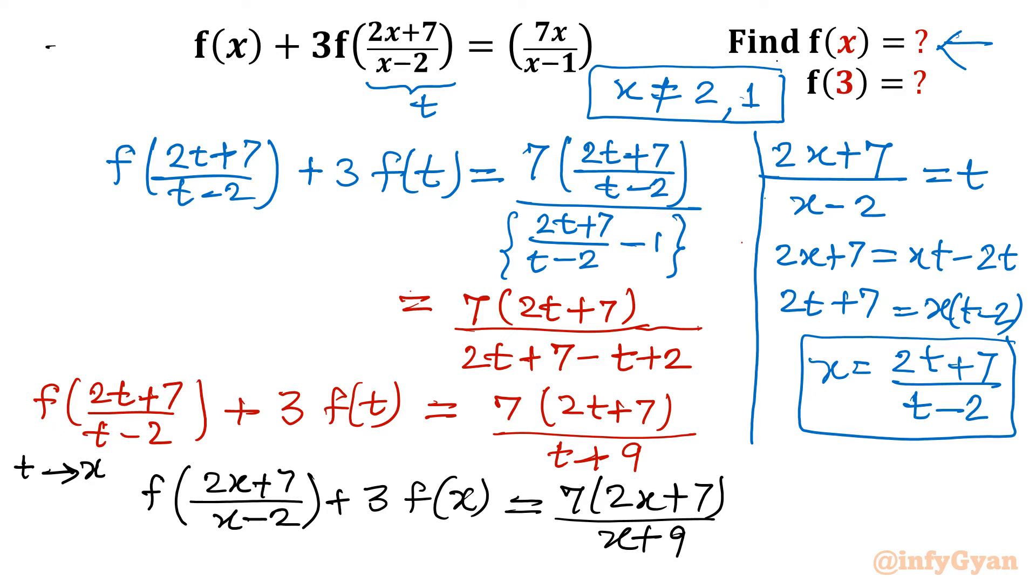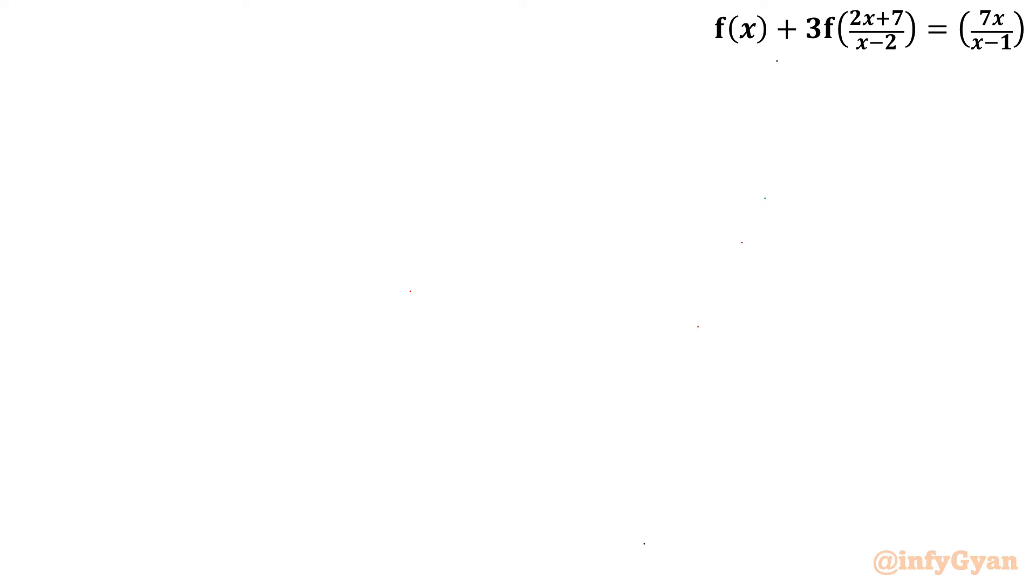So the equation will become f((2x+7)/(x-2)) + 3f(x) = 7(2x+7)/(x+9). Let us consider the original equation as equation number 1, and this equation I will consider equation number 2. My target is to evaluate f(x), so I need to cancel this f((2x+7)/(x-2)). I will multiply the second equation with 3, and then I will take away 1 from it. So I can write 3 times equation 2 minus 1.